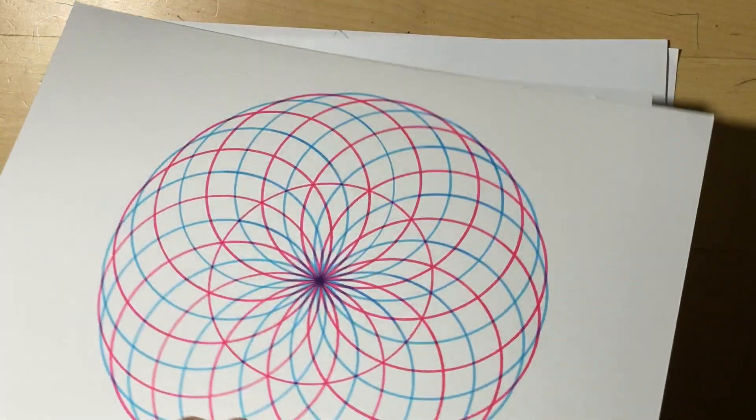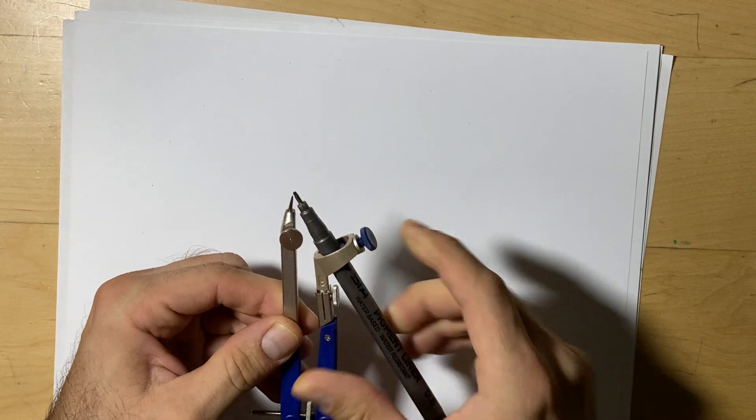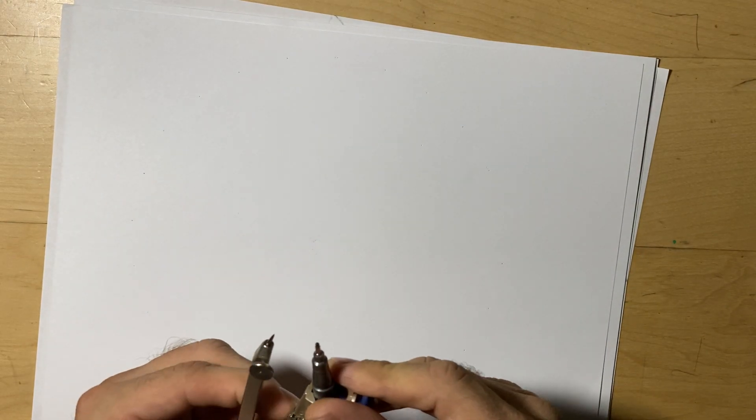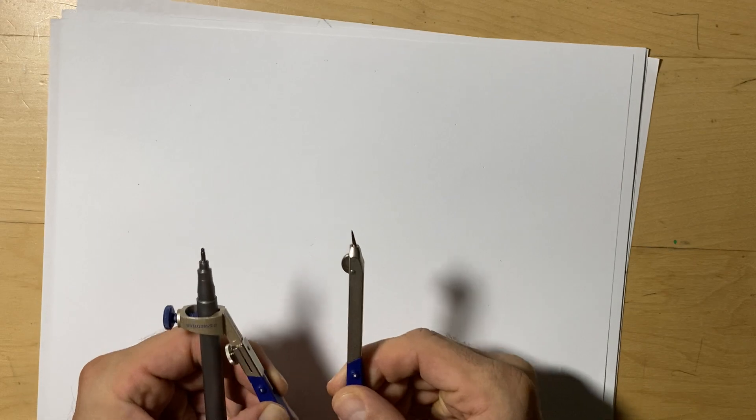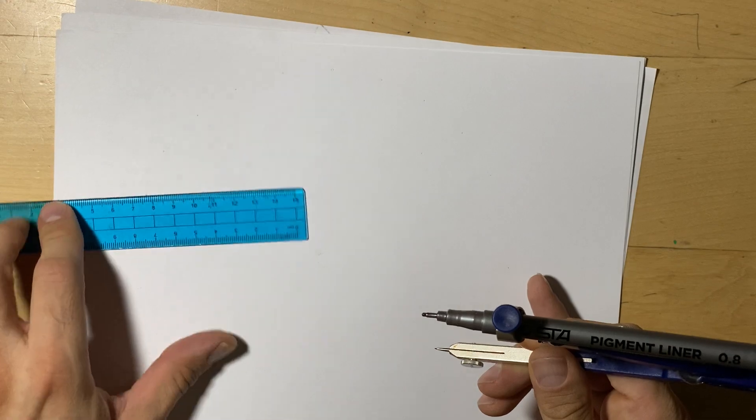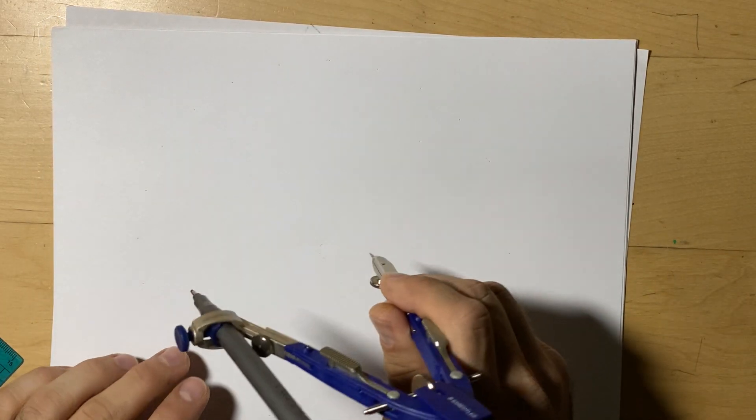The first thing we want to do is make sure our compass is aligned or adjusted, so the pointy tip and the pen or pencil should be at the same length. Next, we're going to estimate the center. Normally if I'm doing artwork, I'll measure and find exactly the middle so I don't make the picture lopsided or off-centered. It tends to bother some people when looking at the picture.